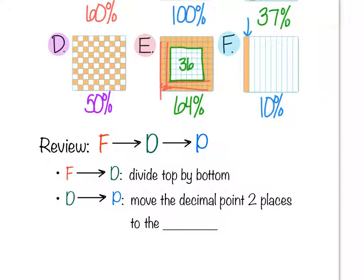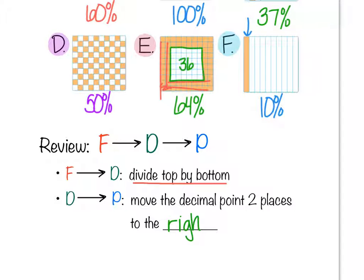To convert between fraction, decimal, and percent, let's start with fraction to decimal. We divide the top by the bottom — always top divided by bottom, not bottom divided by top. To go from decimal to percent, we slide the decimal point two places to the right.